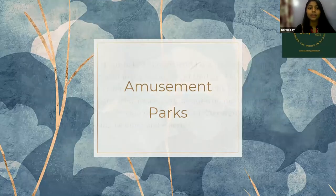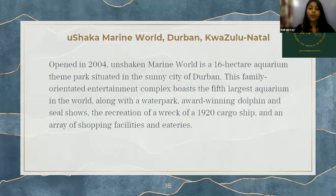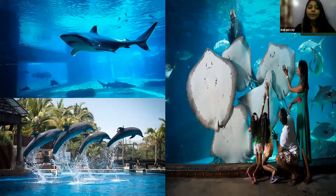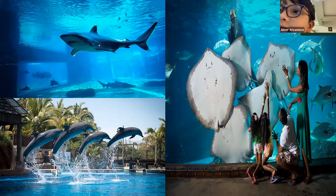Now we will see amusement parks in South Africa. First one is uShaka Marine World, Durban, KwaZulu-Natal, opened in 2004. uShaka Marine World is a 16-hectare aquarium theme park situated in the sunny city of Durban. This family-oriented entertainment complex boasts the fifth largest aquarium in the world along with a water park, award-winning dolphin and seal shows, a recreation of a wreck of a 1920 cargo ship, and an array of shopping facilities and eateries. The marine life includes sharks, stingrays, and dolphins.